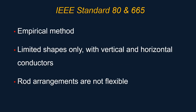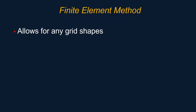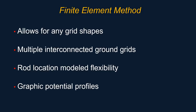Let's talk about IEEE Standard 80 and 665. It is essentially an empirical method, limited in shapes to only vertical and horizontal conductors. The limited shapes are rectangle or square, and rod arrangements are not flexible — everything has to be uniform. That being said, there is also a finite element method supported in the ground grid systems module which allows for any grid shapes. It also allows for multiple interconnected ground grids, rod location flexibility so they don't have to be equally spaced, and it provides a graphical potential profile — you can actually view the step and touch potential graphs in a three-dimensional graph.